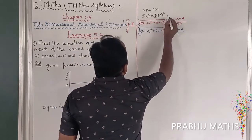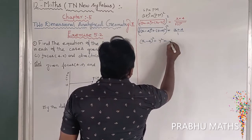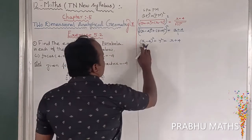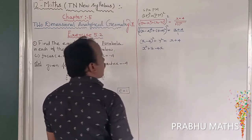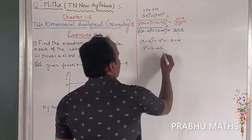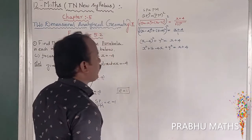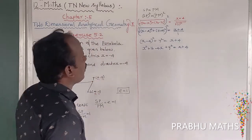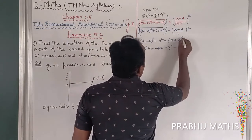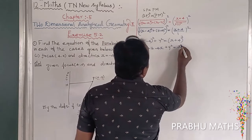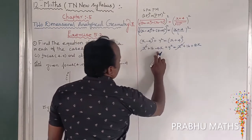Squaring both sides: (x - 4)² + y² = (x + 4)². Expanding using (a - b)² and (a + b)² formulas: x² + 16 - 8x + y² = x² + 16 + 8x. The x² and 16 terms cancel.